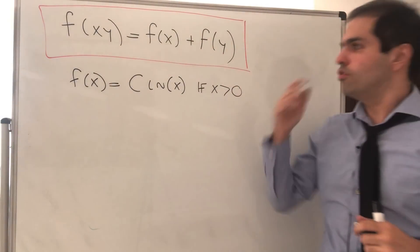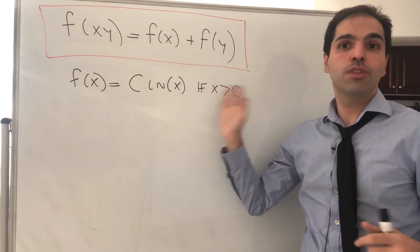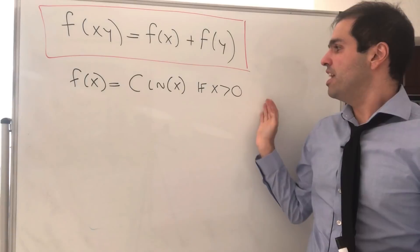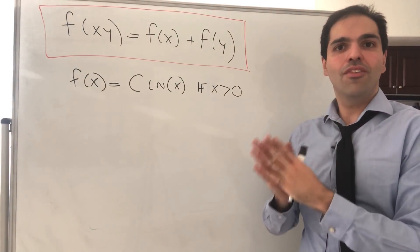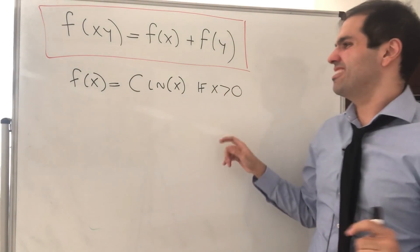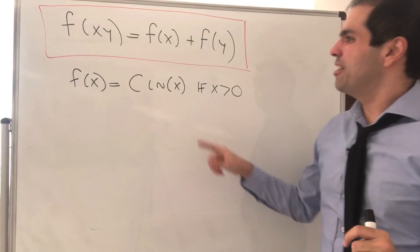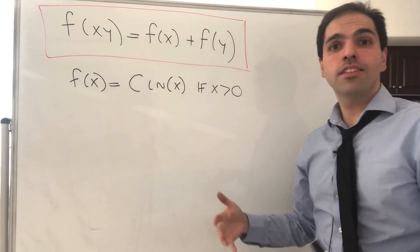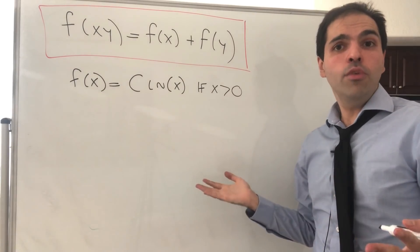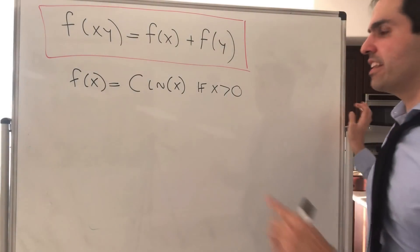All right. And what did we find so far? We found that f of x equals c times ln of x if x is positive. Now again, this is continuous for positive x, I do want to mention that. And the question is, what about at 0, and what about if x is negative?